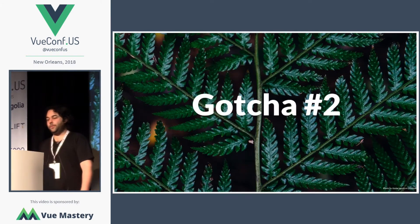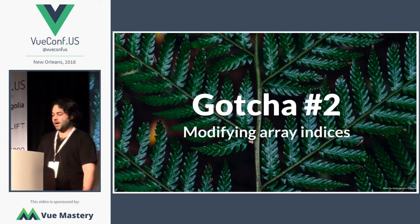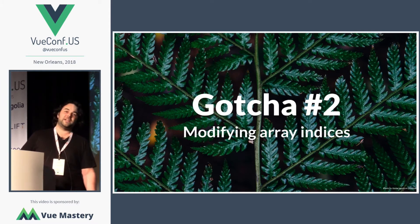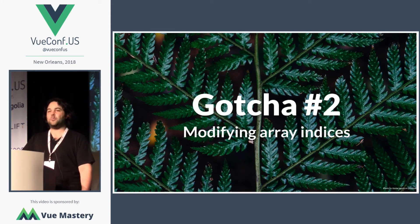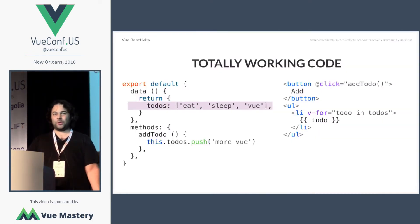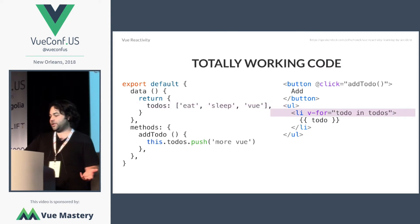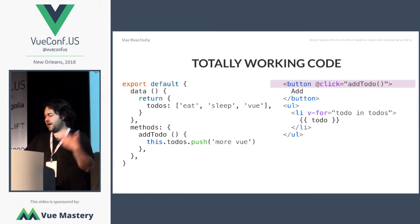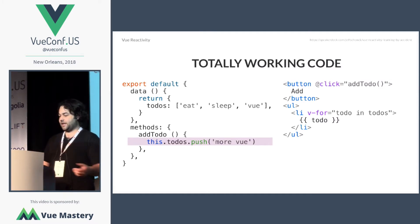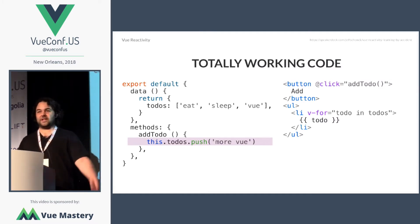Let's move on to gotcha number two: modifying array indices — maybe a little less common, but many of us have run into it as well. Here's some more totally working code: a standard to-do list with 'eat,' 'sleep,' and 'Vue' — obviously — output as list elements, with a button that adds a to-do using this.todos.push('more Vue'), because that's what we love here. And it totally works.